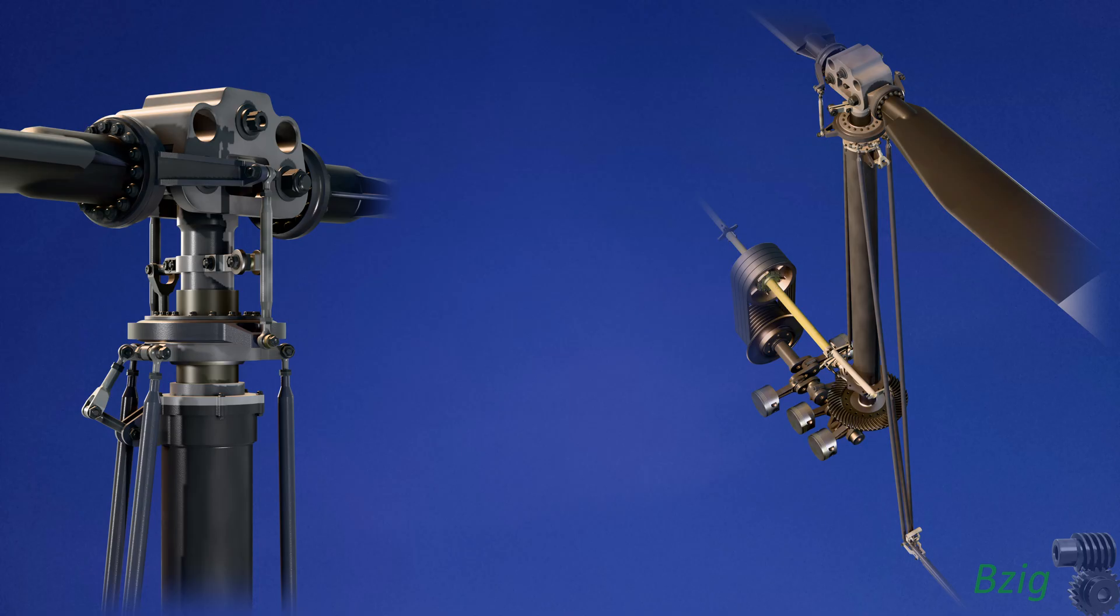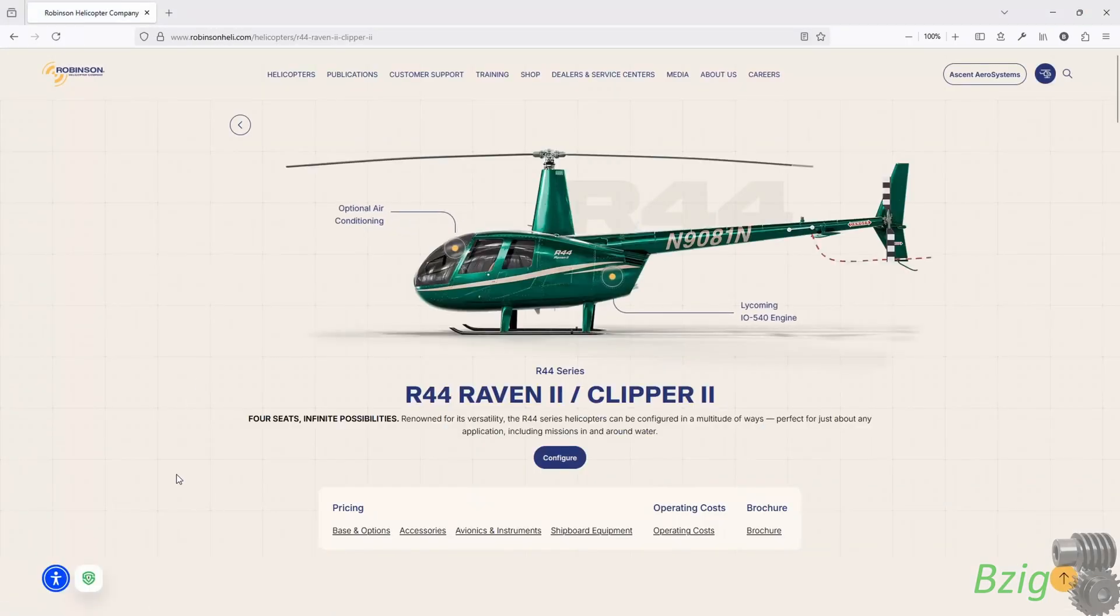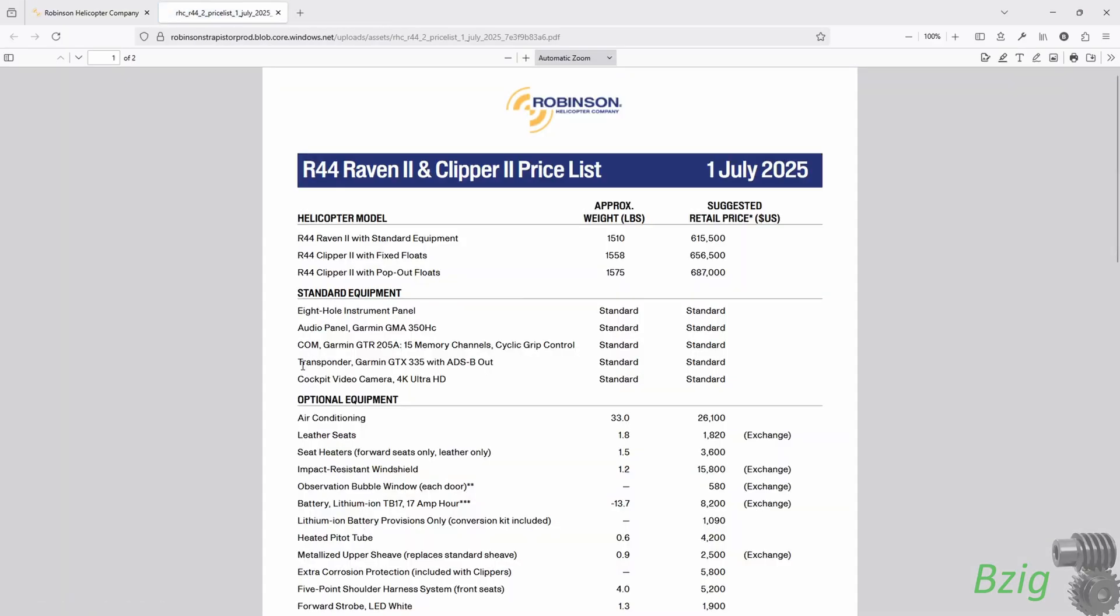In a hydraulic R44, these push rods would be broken by a set of hydraulic actuators. I didn't include those actuators in this model. The Robinson website lists hydraulics as standard equipment on the R44, but I think there was a time when these helicopters were offered without hydraulics. Or maybe I'm getting confused with the R22.